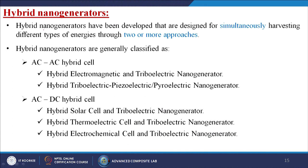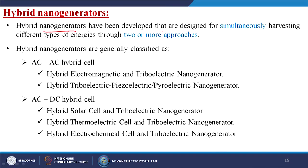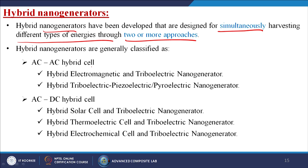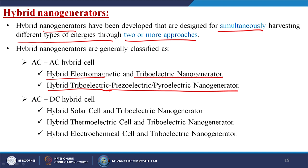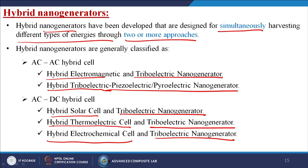Now let us come to hybrid nanogenerators. From the name itself, hybrid means using different modes and combining them together to generate electricity. Hybrid nanogenerators have been developed and designed for simultaneously harvesting different types of energies through two or more approaches. Types include: AC-AC hybrid cells combining electromagnetic and triboelectric nanogenerators; hybrid triboelectric with piezoelectric or pyroelectric nanogenerators; AC-DC hybrid cells combining solar cell and triboelectric nanogenerators; hybrid thermoelectric cell with triboelectric nanogenerators; and hybrid electrochemical cell with triboelectric nanogenerators.